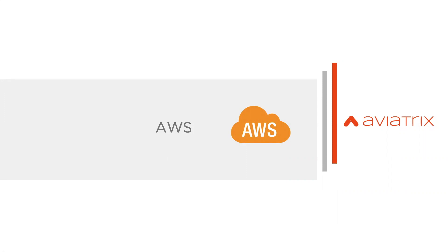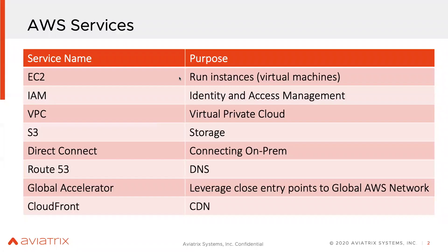Now we are moving into AWS Networking 101. When you log into the AWS portal and look at the networking-related services, the basic foundation block is obviously the virtual machine, or EC2, as they call it. They also need to provide some level of identity and access management, so those options are there, giving you proper access control to get to these EC2 instances or applications.